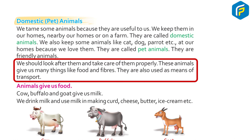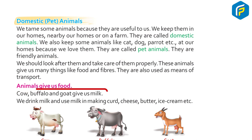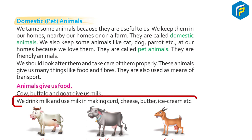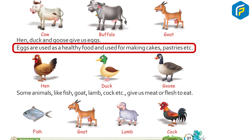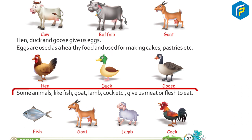These animals give us many things like food and fibers, and they are also used as means of transport. Cow, buffalo, and goat give us milk. We drink milk and use it in making curd, cheese, butter, ice cream, etc. Hen and duck give us eggs. Eggs are used as a healthy food and for making cakes, pastries, etc. Some animals like fish, lamb, and cock give us meat or flesh to eat.